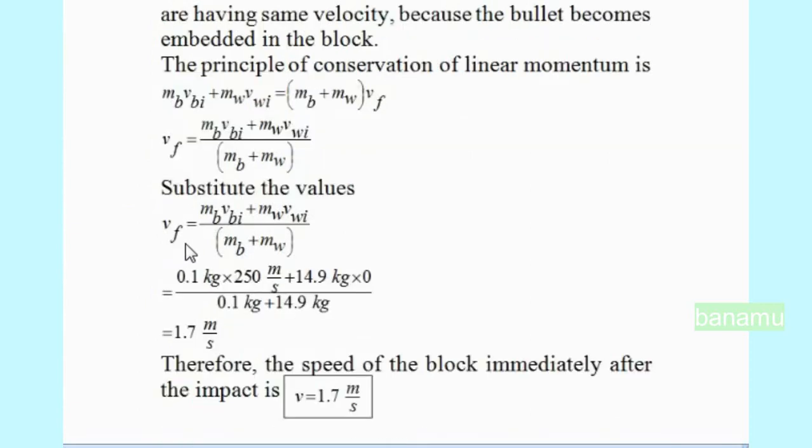VF is equal to 0.1 kg times 250 meter per second plus 14.9 kg times 0 meter per second whole by 0.1 kg plus 14.9 kg. VF is equal to 1.7 meter per second.